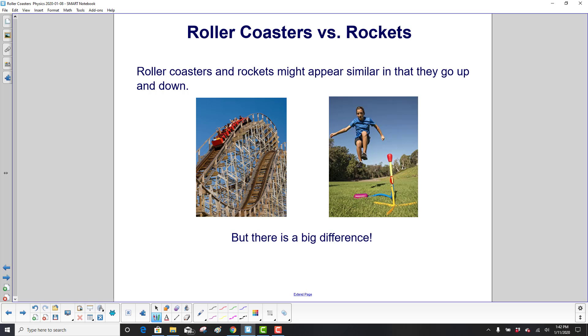Roller coasters and rockets certainly look similar in that they go up and then they go down. But there is a big difference.